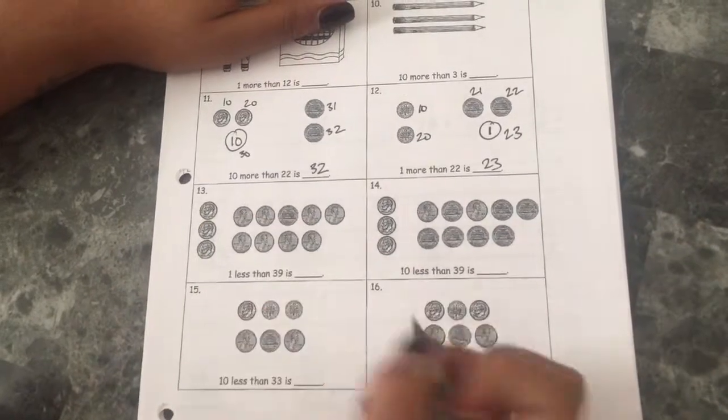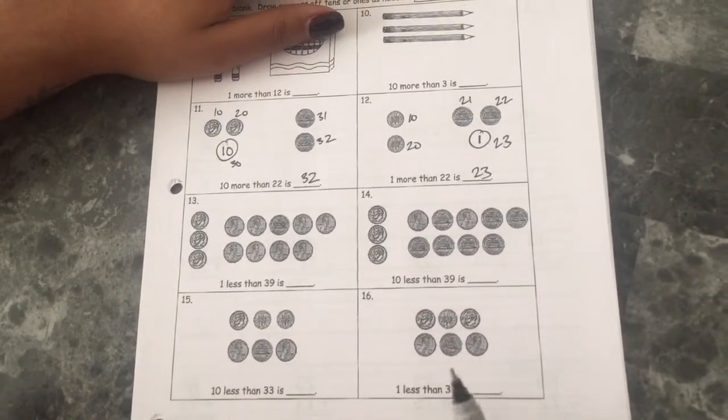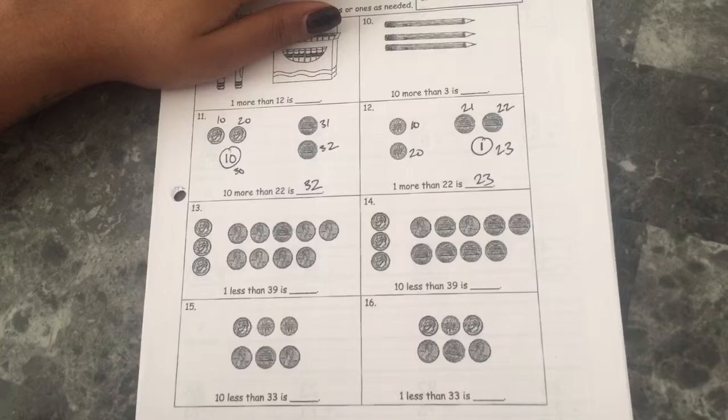For the ones below it's one less than or ten less than. You're just gonna cross off the dimes if it's ten less and a penny if it's one less. Hope that helps!